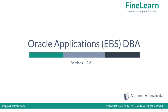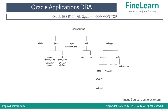In this lesson we'll be seeing about Common Top. Common Top is one of the most important directories in Oracle EBS R12 suite, and it has been there from very initial versions. It is represented and accessible by the environment variable COMMON_TOP. As the name suggests, it contains several files and directories which provide common functionality to all the products in Oracle EBS suite.